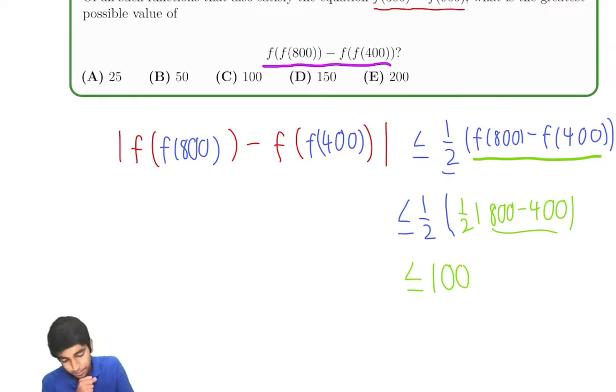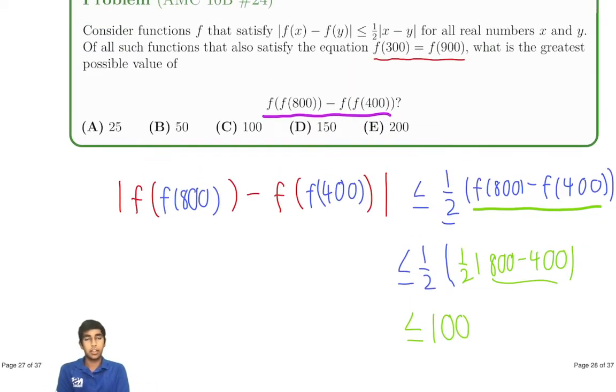But a key thing to notice here is that what are the values of f that we're really looking at in this problem? We've got f(800), of course, f(400), of course, f(300), and f(900). So we've essentially got four f values and let's try to relate them somehow.